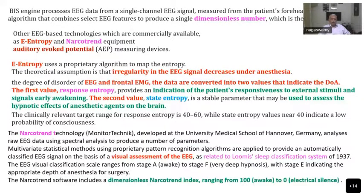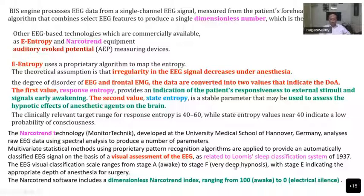The narcotrend technology, developed at the University of Medical School Germany, analyzes raw EEG data using spectral analysis to produce a number of parameters. It is a multivariate statistical method applied automatically, classifying the EEG signal based on visual assessment and the Lumi sleep classification system introduced in 1937. Instead of numbers, narcotrend uses alphabets: stage A means fully awake and stage F is very deep hypnosis, with stage E indicating the depth of anesthesia appropriate for surgery.